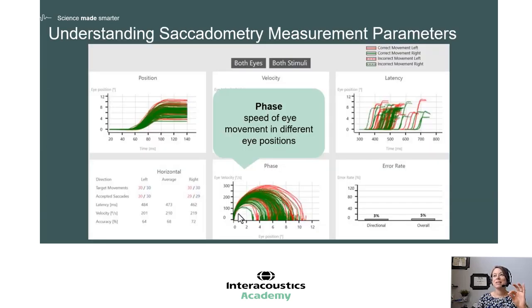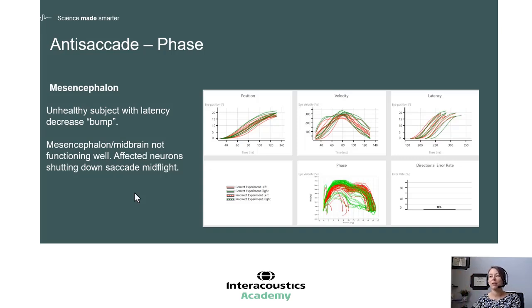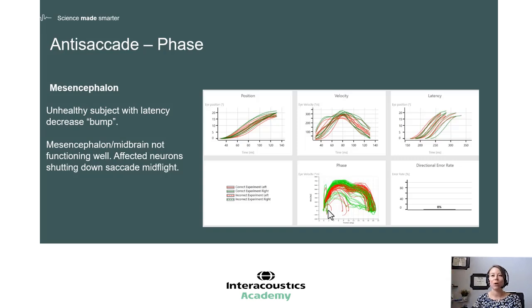Last is phase — the speed of eye movement in different eye positions. This is an example of a normal phase, which compares eye velocity and speed over position. Interesting phase abnormalities are seen in patients that have issues with their mesencephalon. This is when affected neurons are shutting down the saccade mid-flight, and you get an M-shaped bump in the phase. The eyes are on their way to the target, but the neurons that help the eyes move shut down, causing a temporary drop in speed, which then picks back up to complete the movement. If you see any M-shaped phase abnormalities, that may be due to mesencephalon issues.